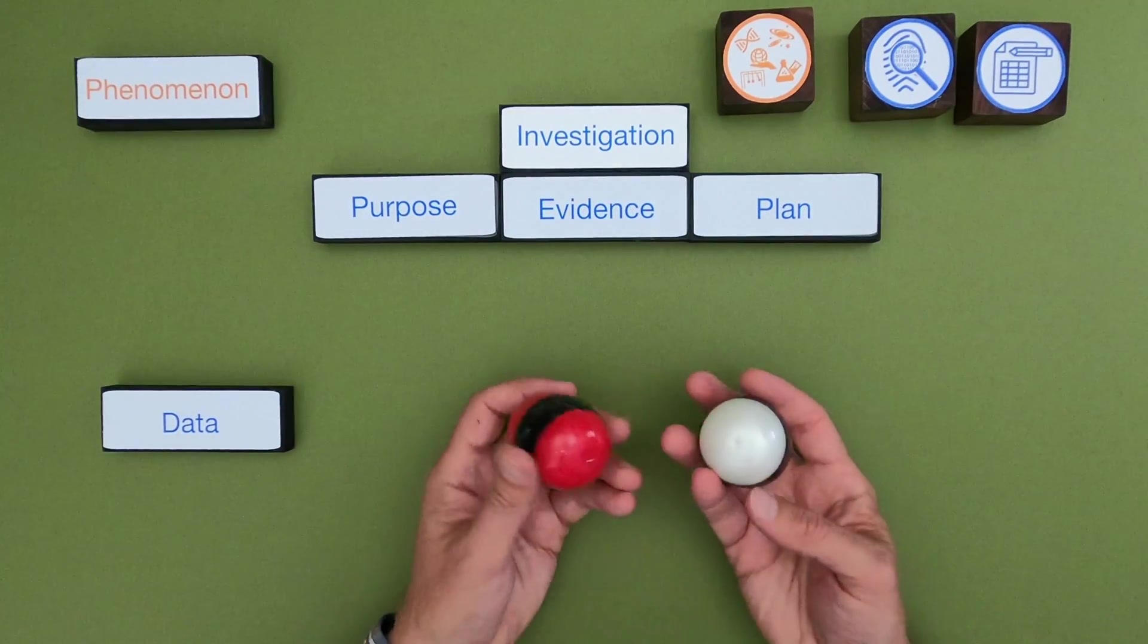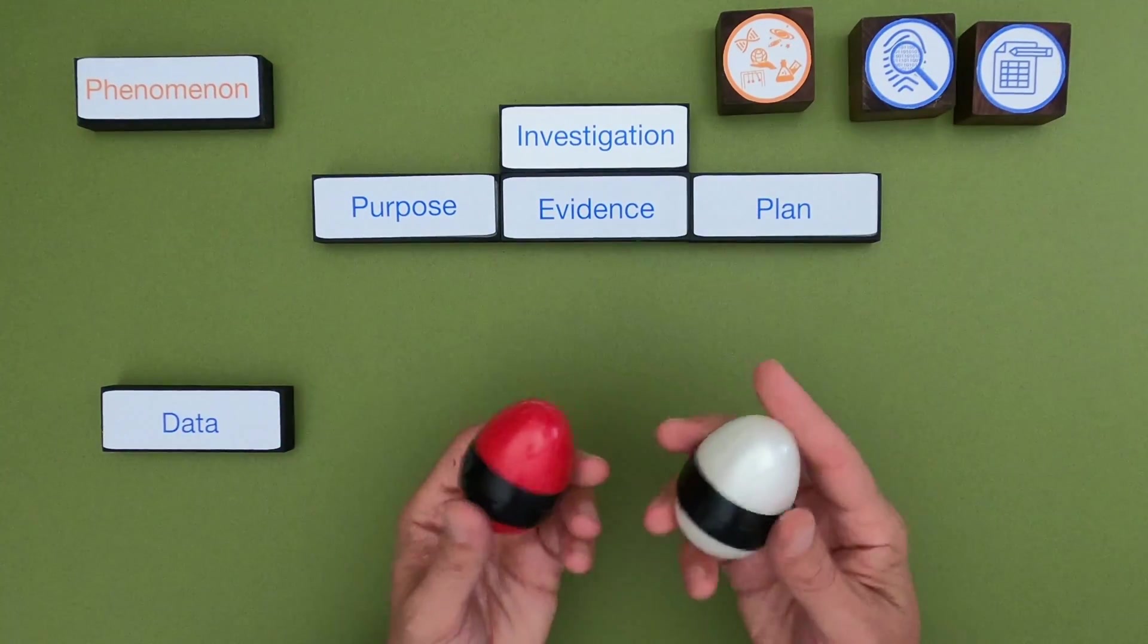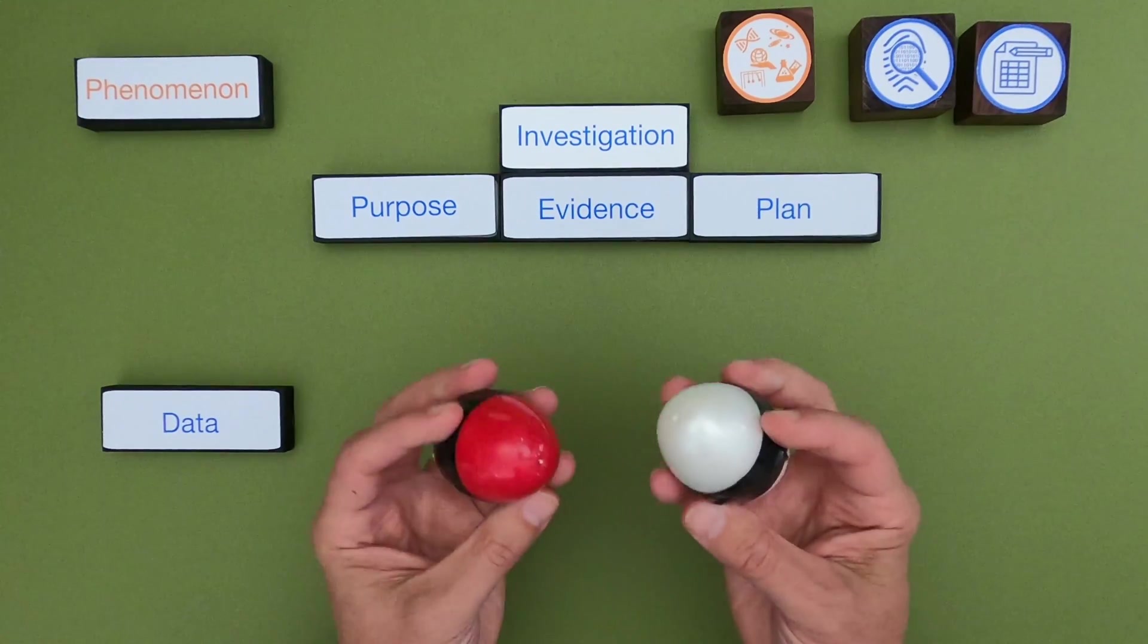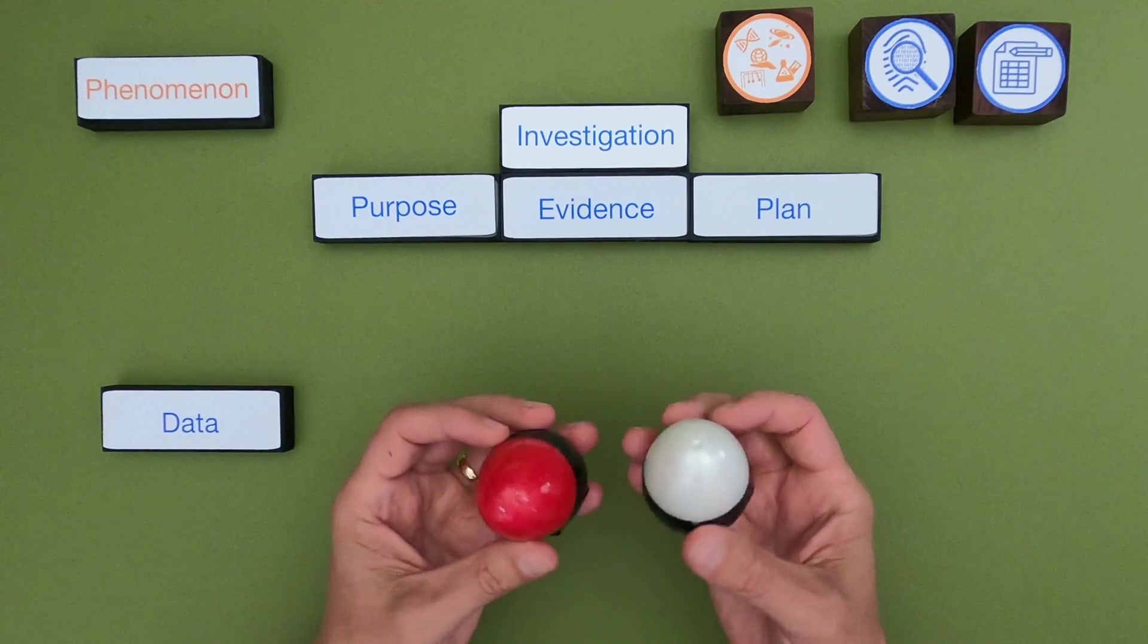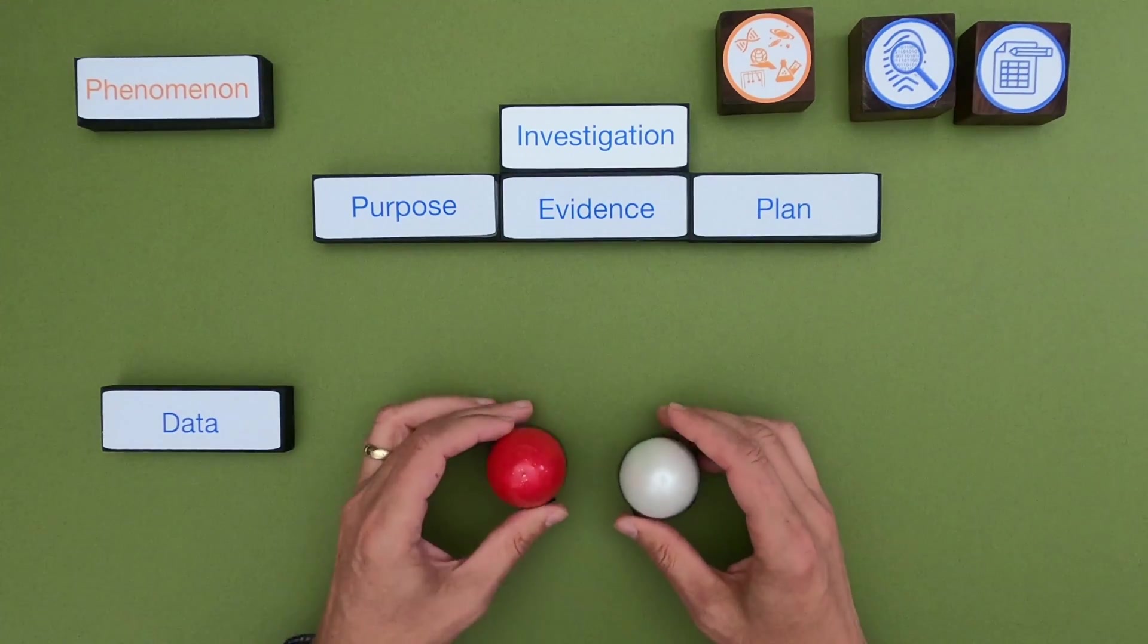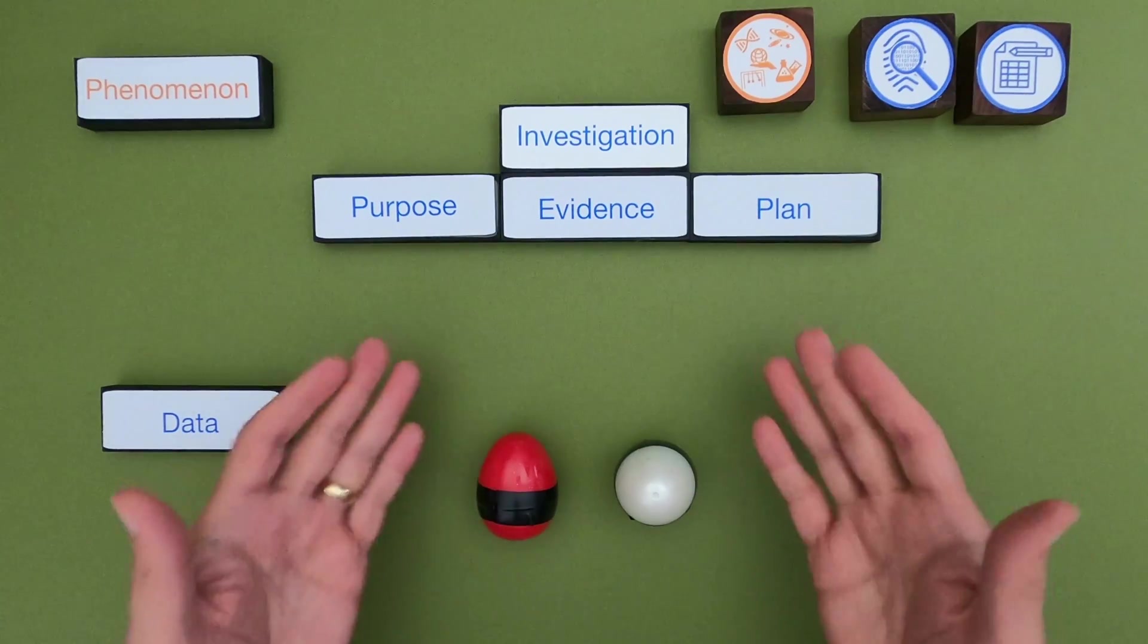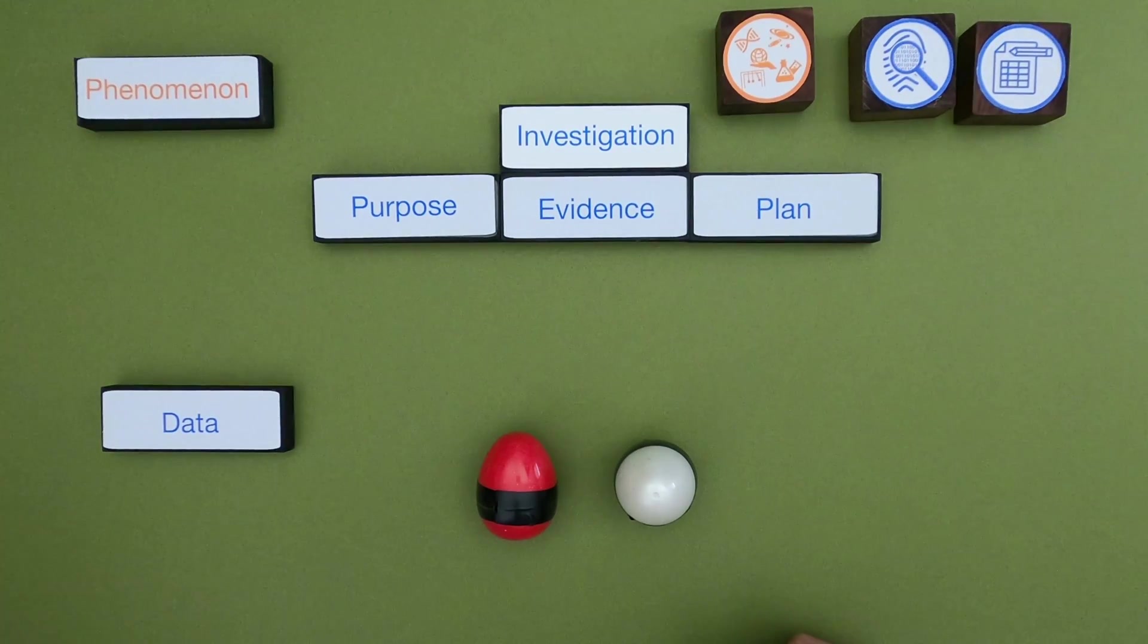Okay so for the first investigation what we have are some taped eggs. So we have a red egg and we have a white egg and they're taped shut. And I can feel something inside both of them but I'm not going to open it up. What we're going to do is just use these as a way to figure out exactly how an investigation works.